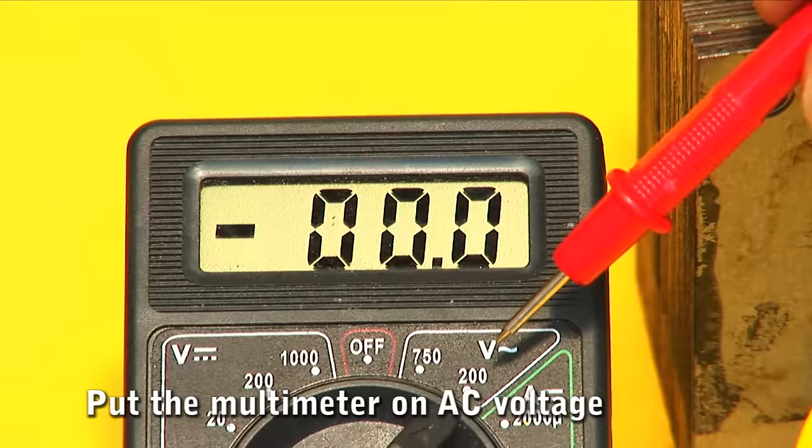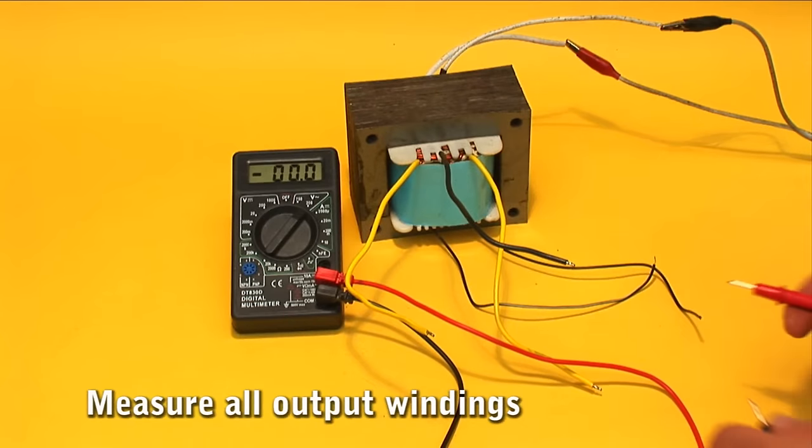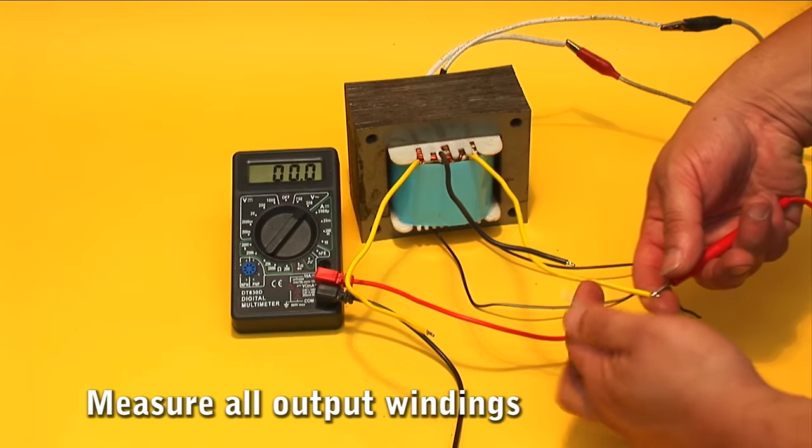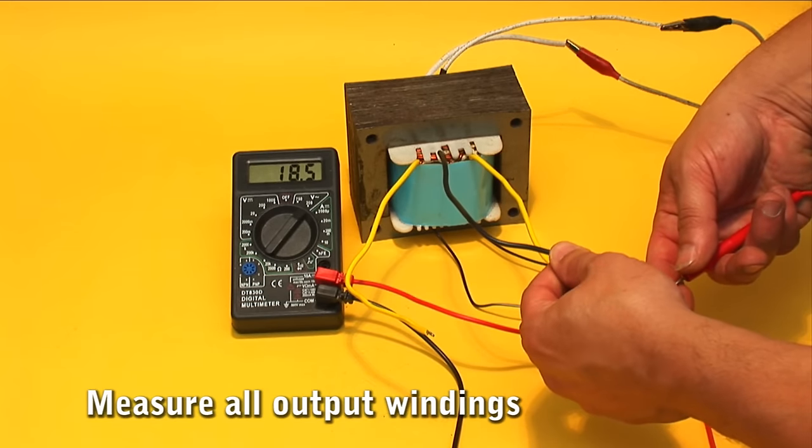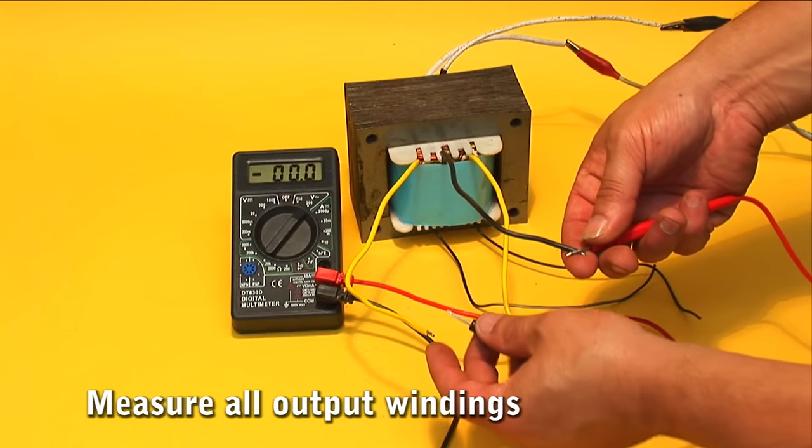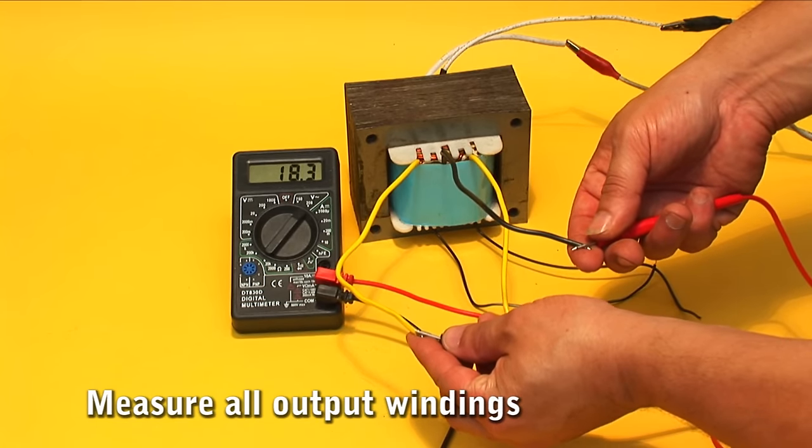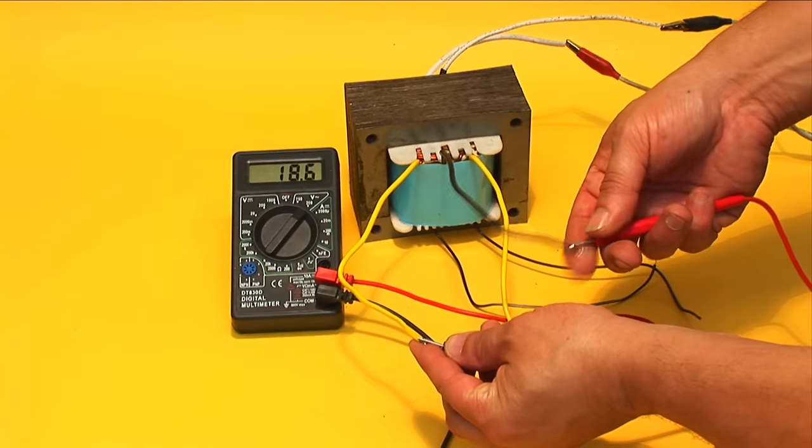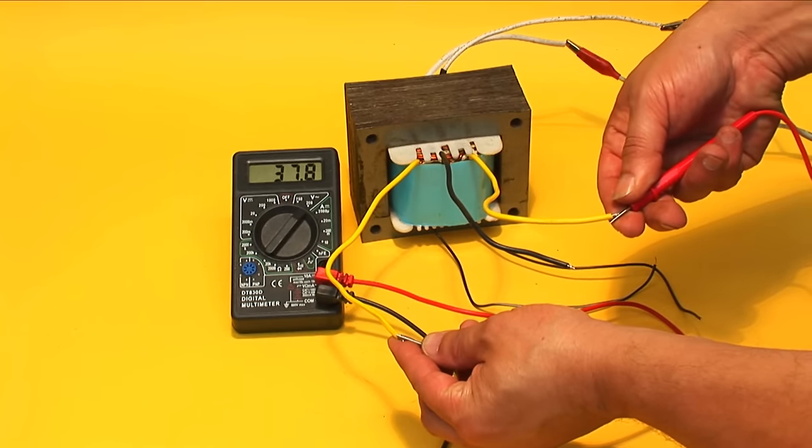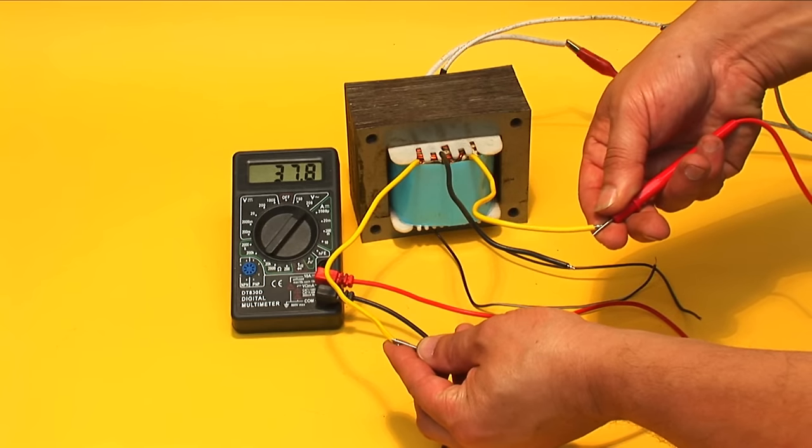Now connect the transformer to the outlet. With the multimeter on AC voltage scale, place one end on the right end of the secondary winding and the other in the central tap. You should mark the desired voltage, in this case 18 volts AC, as well as between the left and central tap. Measure between the two ends of the secondary winding. You should mark twice, in this case 36 volts AC.